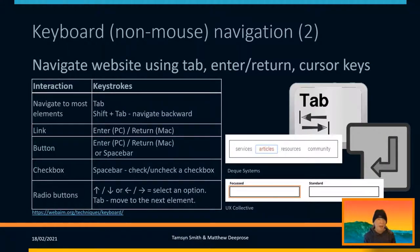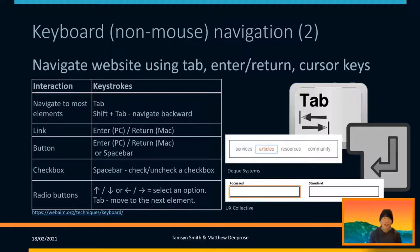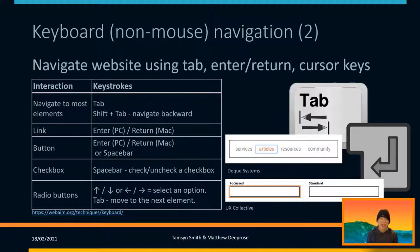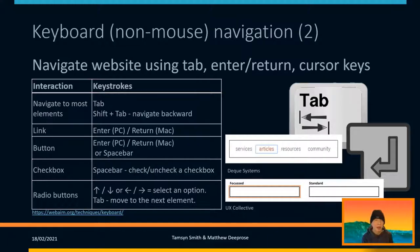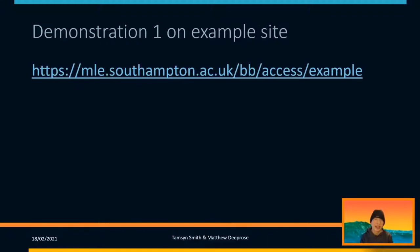The keys we would typically use are the Tab key to move between elements on the page, Shift-Tab to go backwards, Enter or Return to select links, and the spacebar to apply checkboxes. With radio buttons, we move between them using the cursor keys.